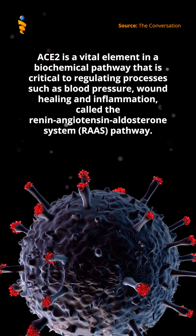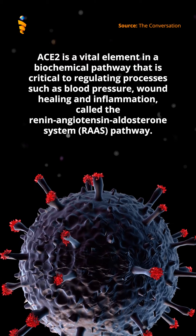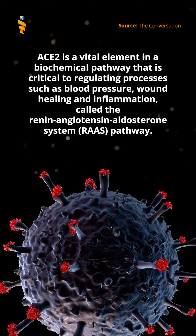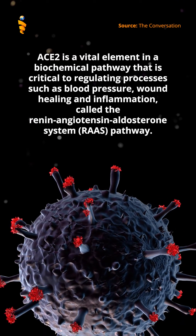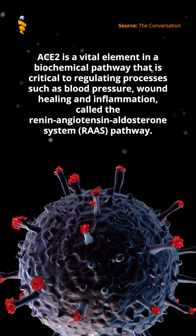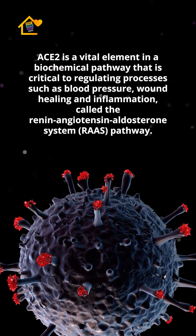ACE2 is a vital element in a biochemical pathway that is critical to regulating processes such as blood pressure, wound healing, and inflammation, called the renin-angiotensin-aldosterone system, or RAAS pathway.